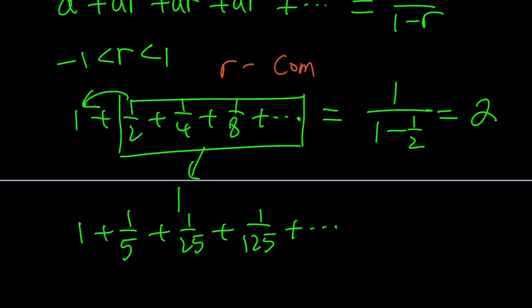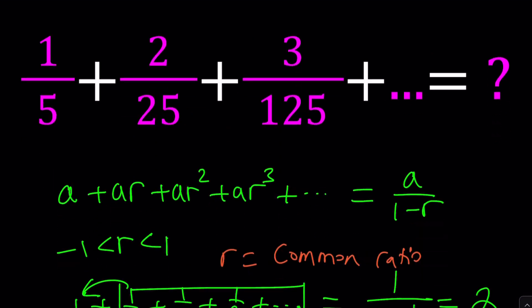R is for common ratio. So, R is the common ratio. In other words, if you divide the two consecutive terms, of course, you have to use the second one by the first, so on and so forth, that's going to give you the common ratio.